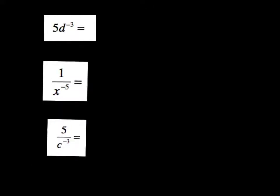Be careful to pay attention to what has the negative exponent. As you can see in this top example, the d is being raised to the negative third. So we need to divide by d to the third. However, the five does not have a negative exponent. So this one would simplify to five divided by d to the third. Notice the five does not move to the denominator, for it didn't have a negative exponent.